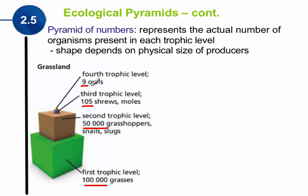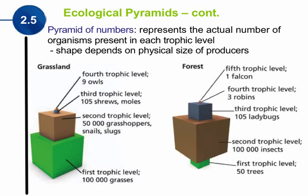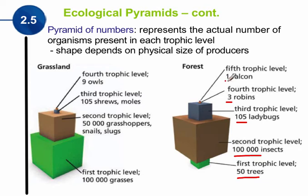If we look at a pyramid of numbers for a forest, the pyramid looks a little bit different — not a traditional pyramid shape. In a forest, the bottom level is just 50 trees. Those 50 trees can support 100,000 insects, which can then support 105 ladybugs, which then can support 3 robins. At the 5th trophic level, that supports 1 falcon. So 50 trees supports 1 falcon. Understanding the numbers can be useful when describing an ecosystem.